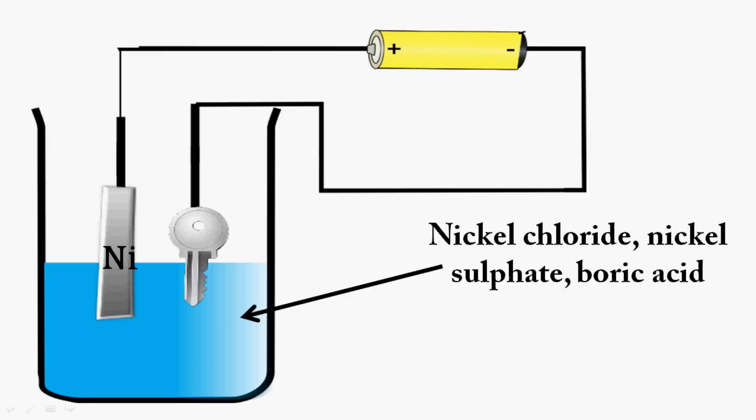Now this way we can get nickel plating too. To get nickel plating on a key, we use a piece of nickel instead of a piece of copper as the positive electrode, and we use a nickel compound as electrolyte like nickel chloride or nickel sulfate. These are very easily available.